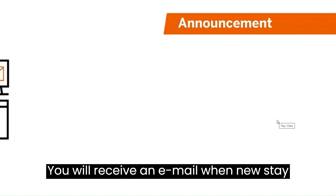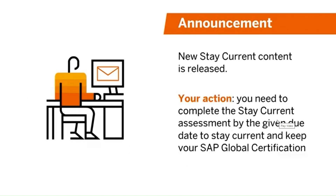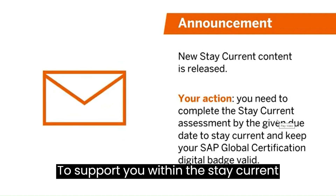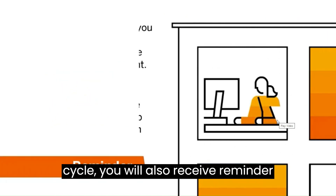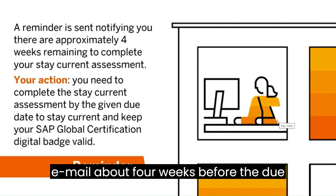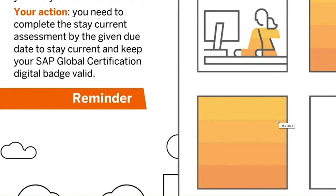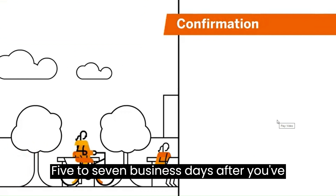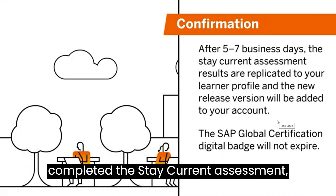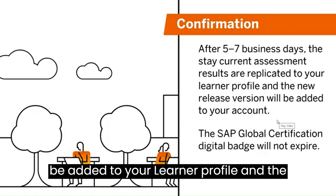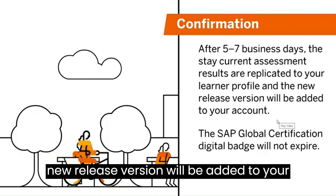You will receive an email when new stay current content is available. To support you within the stay current cycle, you will also receive a reminder email about four weeks before the due date. Five to seven business days after you've completed the stay current assessment, the information that you've passed will be added to your learner profile and the new release version will be added to your account.